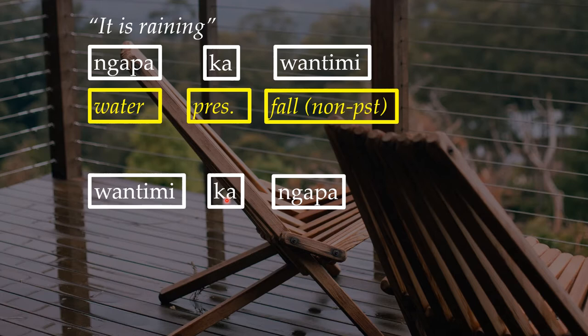This is an example of an intransitive sentence. An intransitive sentence means there are usually two parts: there is the subject — in this case, the water — and there is the action, which is the verb 'falling.' We're going to get to transitive sentences, where there are three parts. This will be a little unusual if you're used to European languages, or languages like Hawaiian, Chinese, or other Asian languages — this part is going to be a little bit tricky for you.